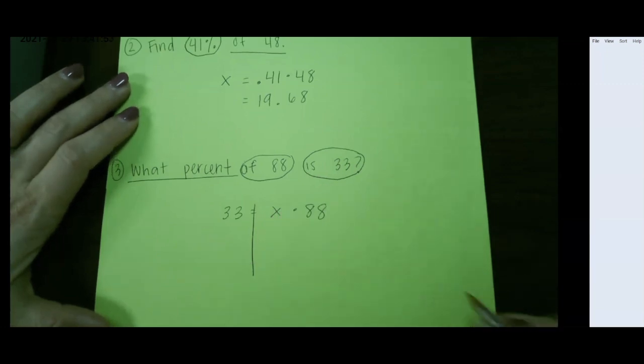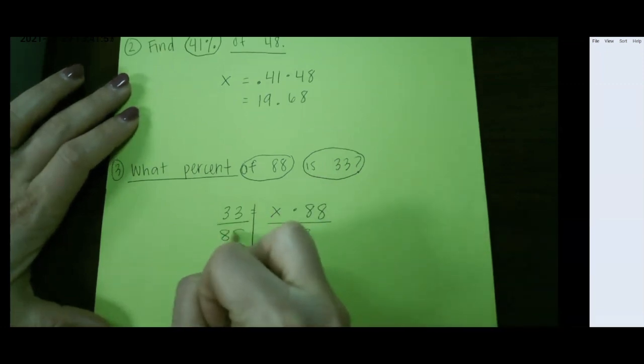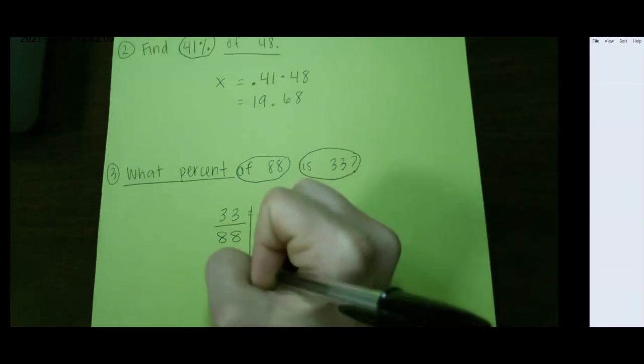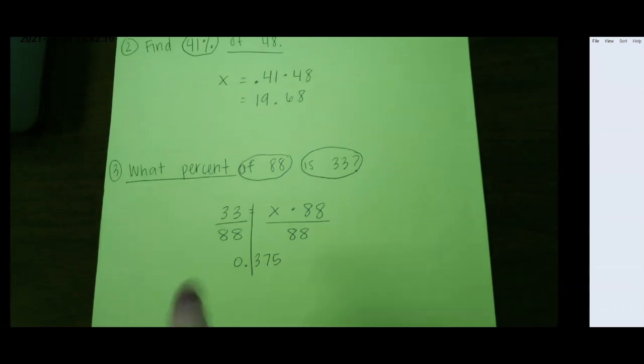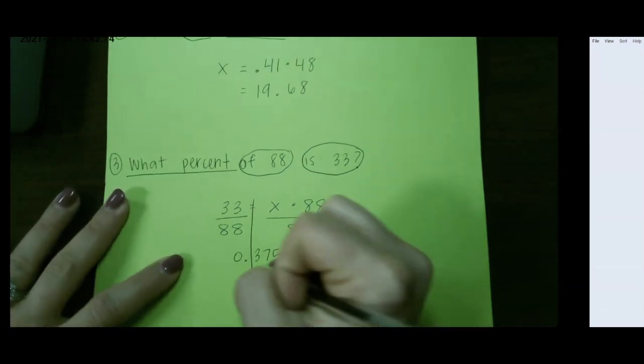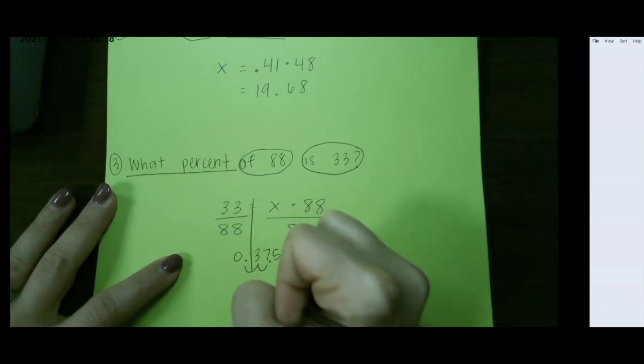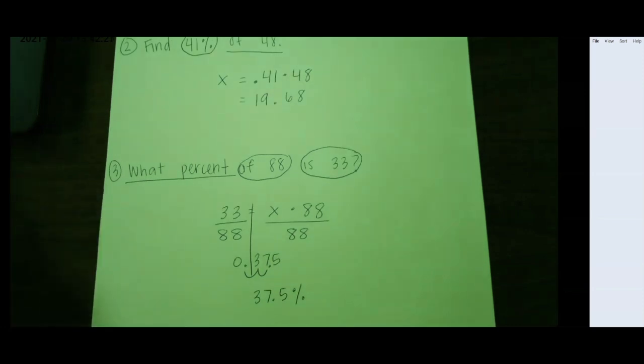So I want to divide by 88 on both sides. And 33 divided by 88 gives me 0.375. This is still a decimal, so I want to change it into a percent. So I'm going to move the decimal two places to the right. So 37.5% would be my answer for that one.